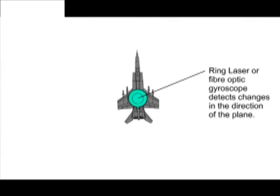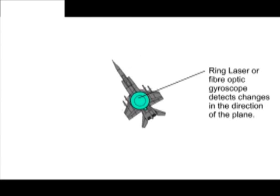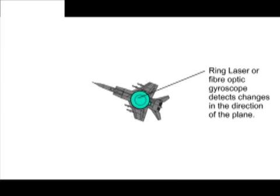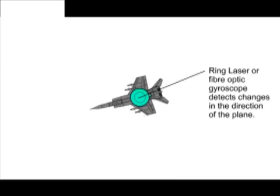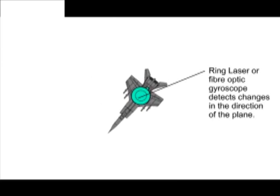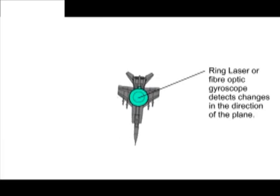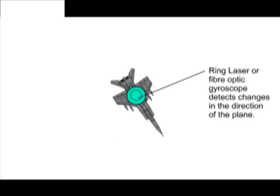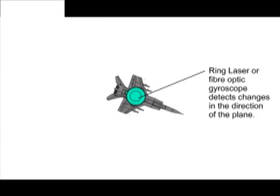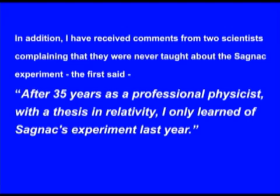This Sagnac effect is used by airlines for their compass directions. As the plane turns, the change in the fringes are translated into a change in the direction of the plane that then registers on the cockpit compass. In addition, I have received comments from two scientists, complaining that they were never taught about the Sagnac experiment.